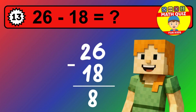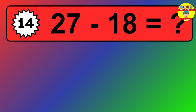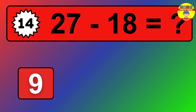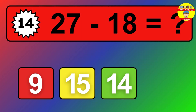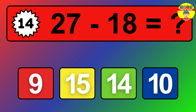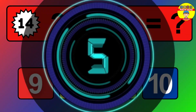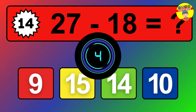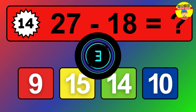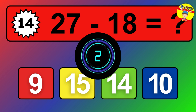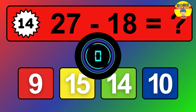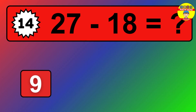We start with the units. 3 minus 7 is not possible, so we need to regroup. We take one 10 from the tens column. Now we have one tens, and the units become 13. Now we subtract. 13 minus 7 is 6. Then we go to the tens. 1 minus 1 is 0. The final answer is 6.